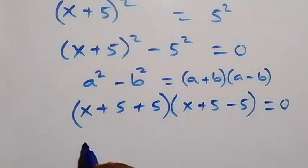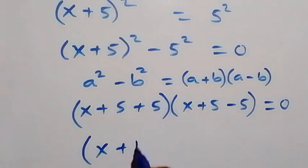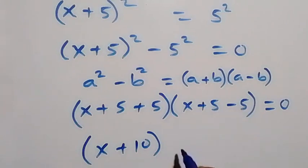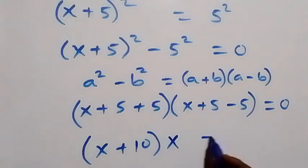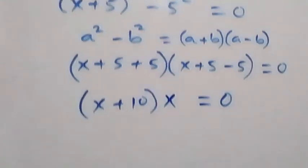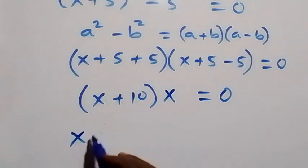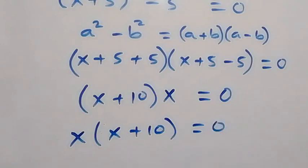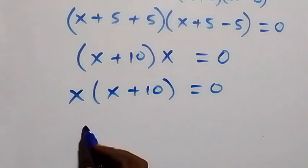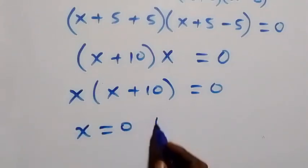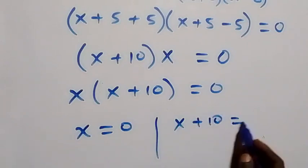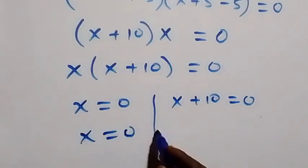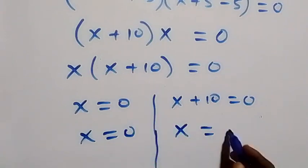Then x + 5 + 5 gives x + 10, and x + 5 − 5 gives just x. So this is the same as x times (x + 10) equals zero, which implies either x equals zero or x + 10 equals zero, giving x equals minus 10.